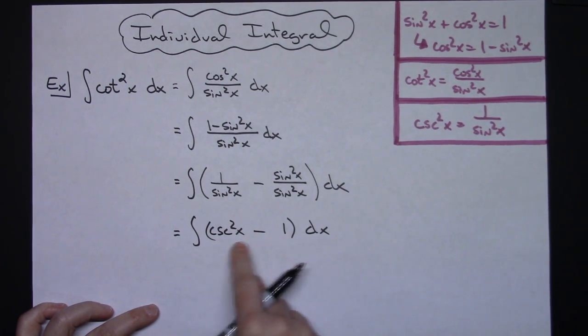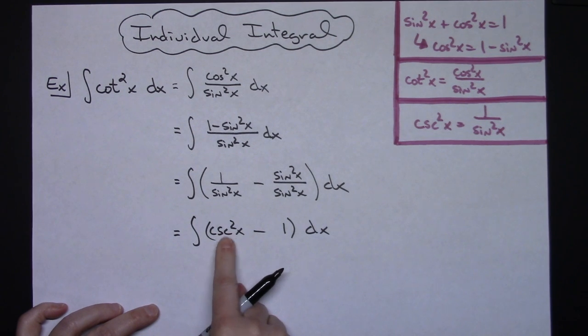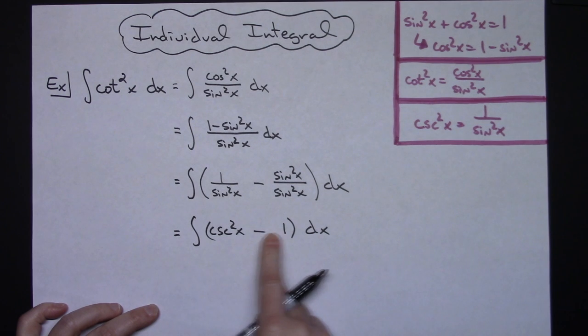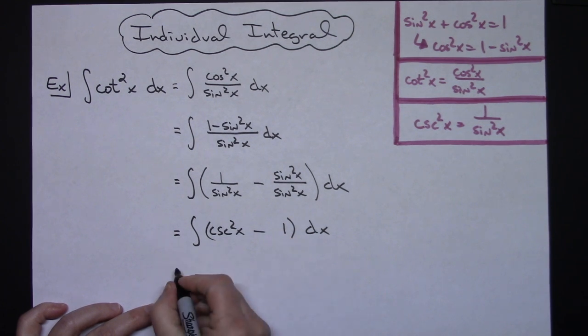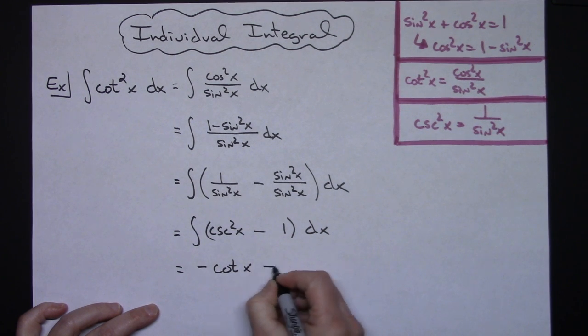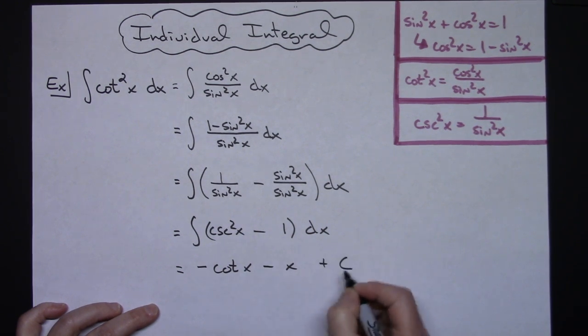I can then easily integrate each of these individually. This one you should hopefully have memorized as negative cotangent x and this will integrate to just a plain x. So I'll have a negative cotangent x minus x and then plus c.